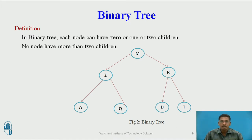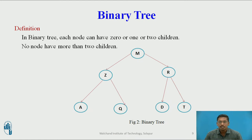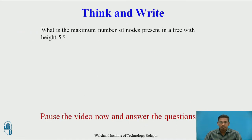Now we will see the definition of binary tree. In a binary tree, each node can have 0, 1, or 2 children — no node in the binary tree can have more than 2 children. In the previous example, that tree may have 4 children, so that is not a binary tree. This diagram is an example of a binary tree where every node can have a maximum of 2 children.